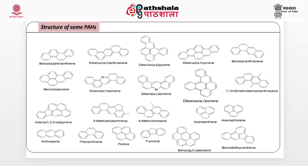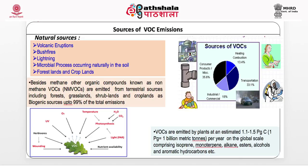These structural examples show that polyaromatic hydrocarbons are diverse organic compounds with mutagenic and carcinogenic activities. Looking in detail at VOC emission sources, natural sources include volcanic eruptions, bush fires, lightning, and microbial processes occurring naturally in soils, forest lands, and croplands.